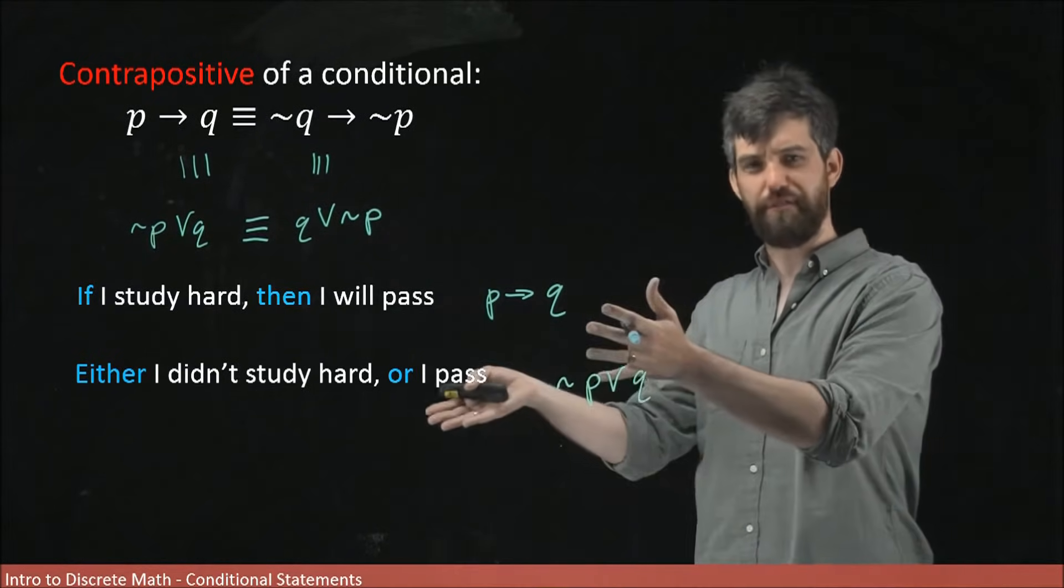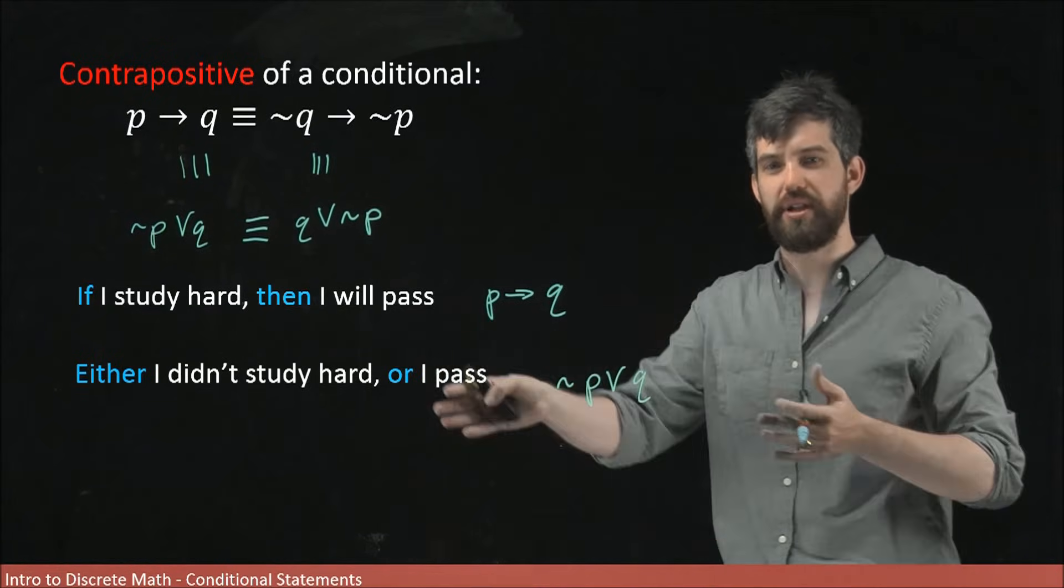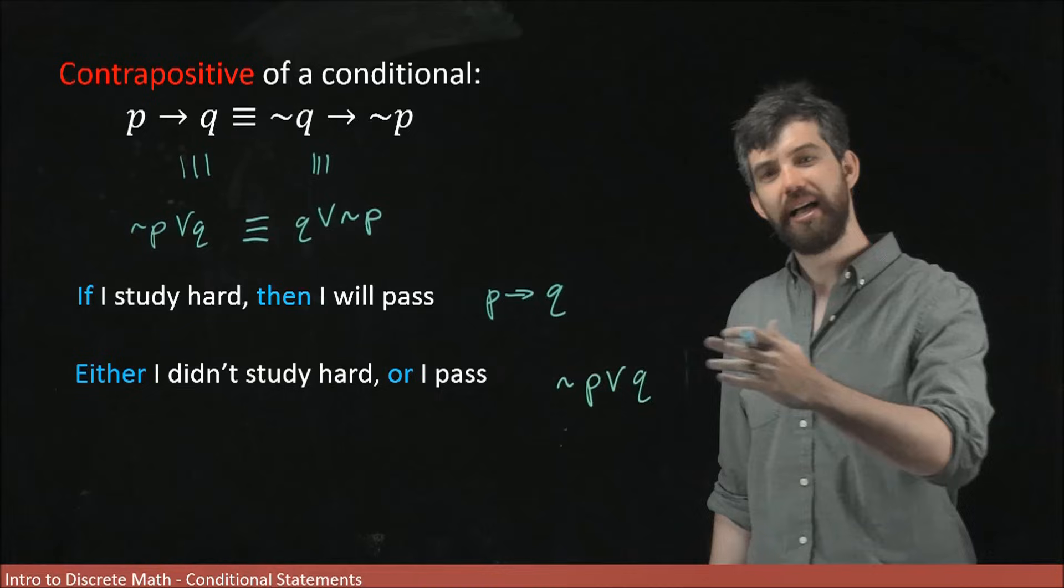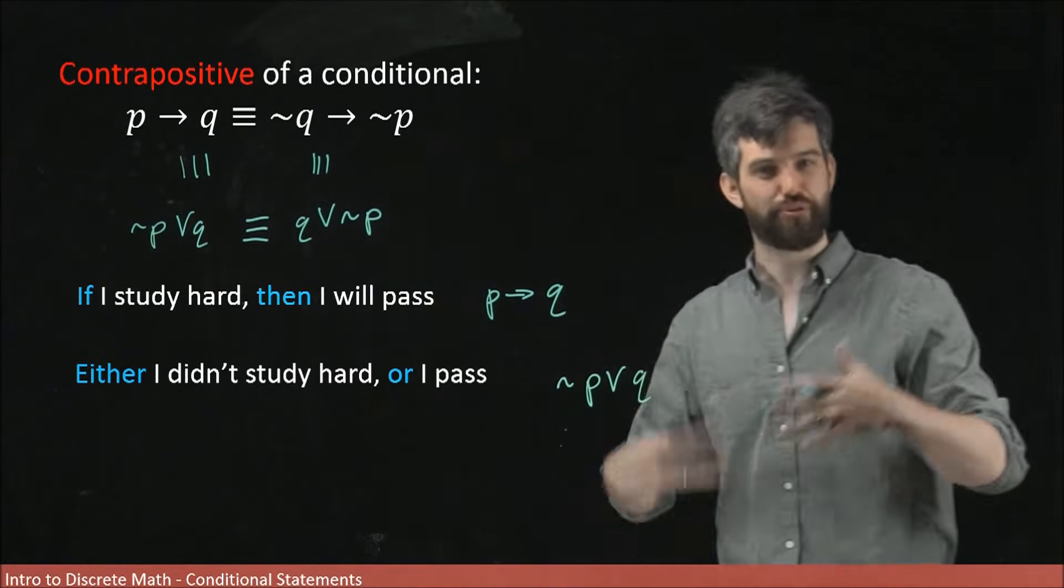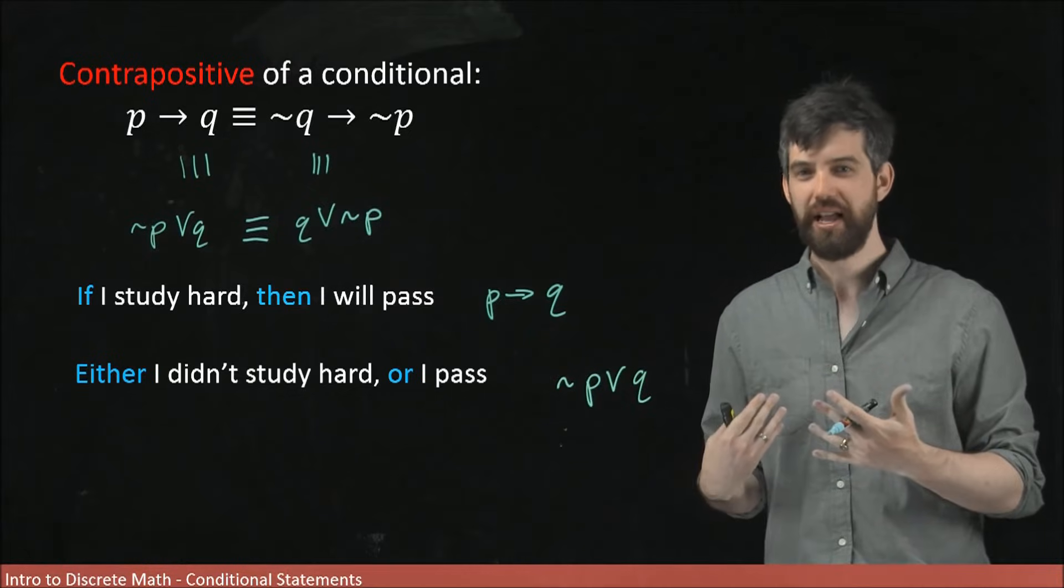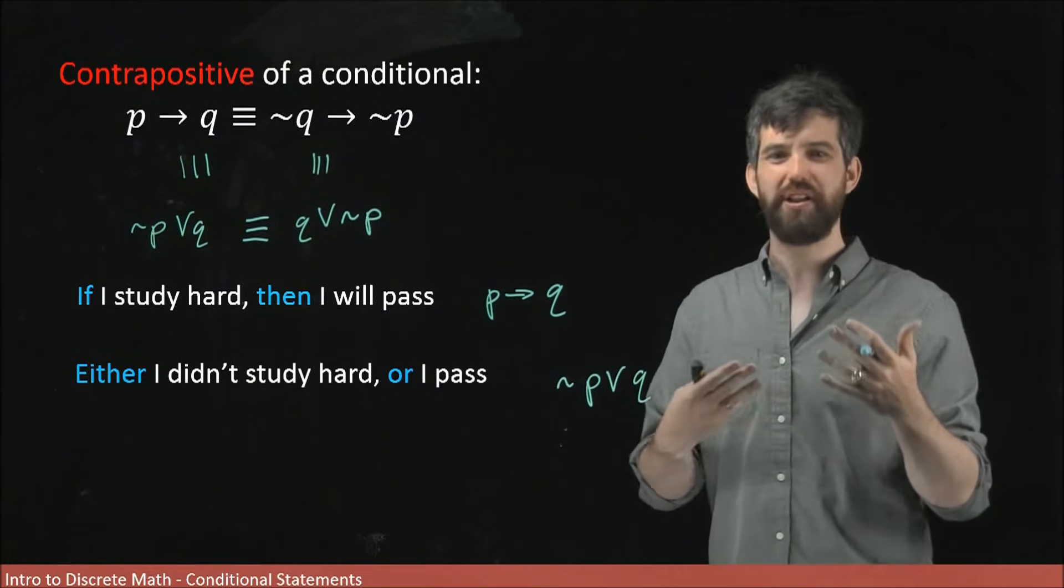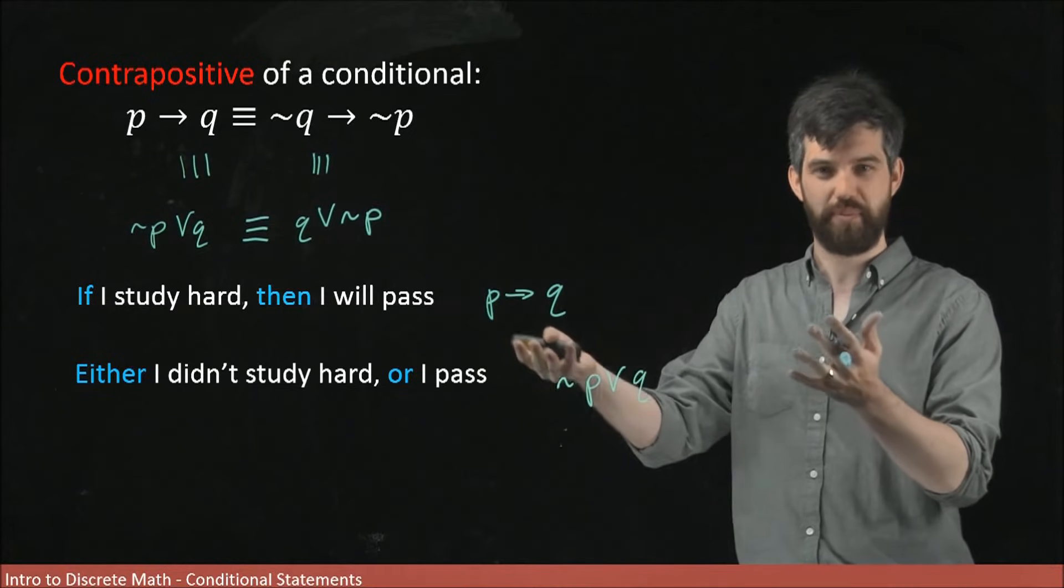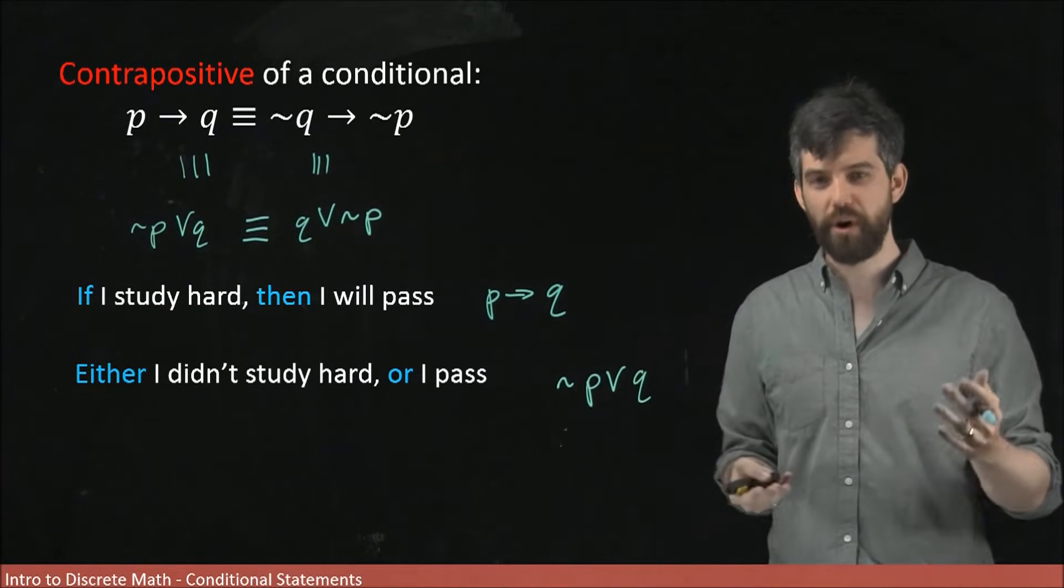By the way, I'll note that there's a few tense issues going on here. In the first statement, the I will pass is like a future event. In the second statement, it's a present event. I pass it in the past. I didn't study hard. The tense issues are just a little bit of our English trying to deal with what these statements are, the P and the Q. So we don't have to really worry about them.